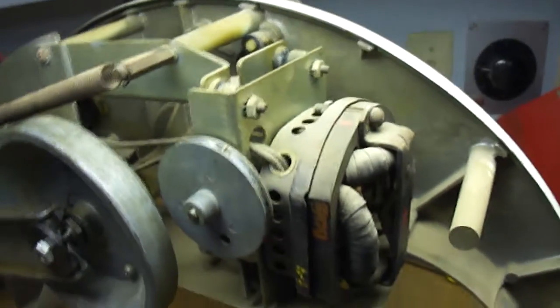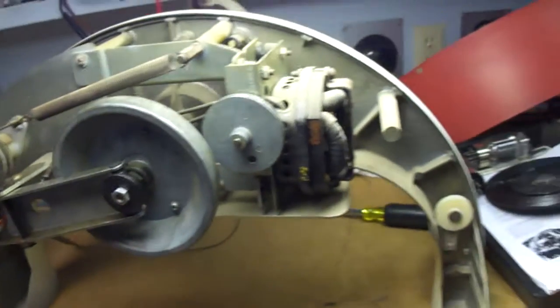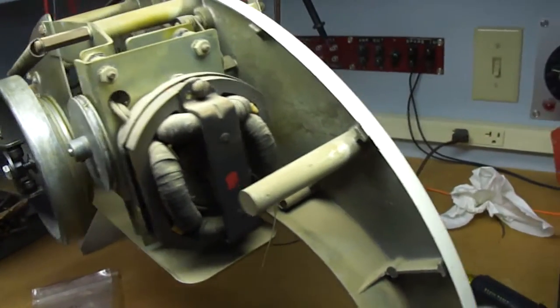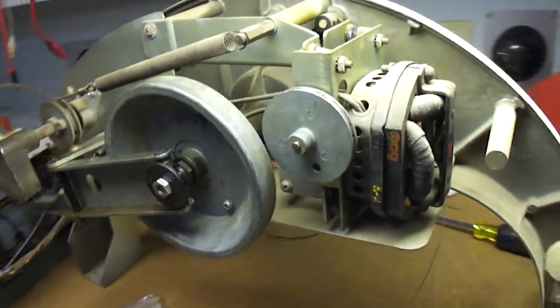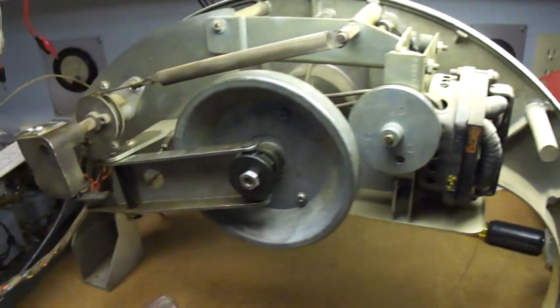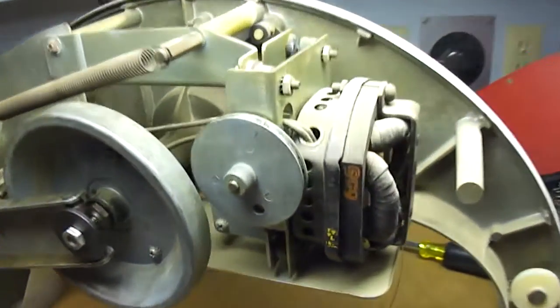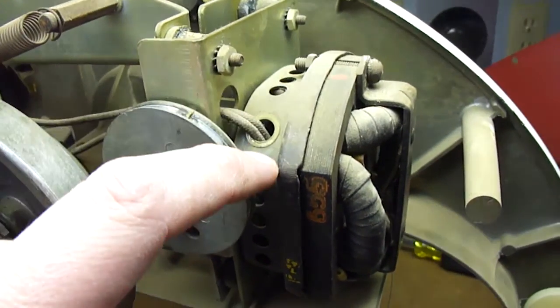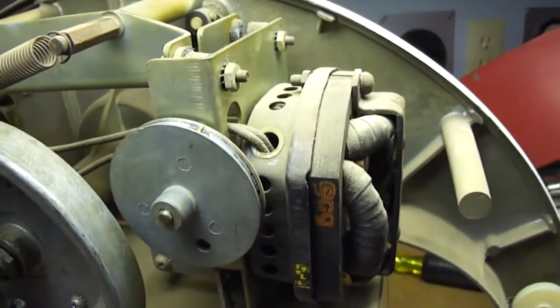The earliest models using this design, and this record player design is used from I think the model 1700 up to the 3300, there were some changes along the way. Later models don't have this worm gear type motor setup. They use a direct drive motor.